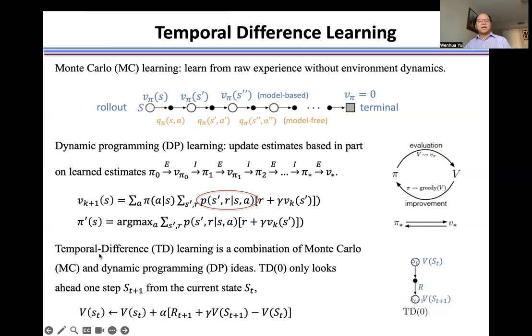Now, the temporal difference learning is a combination of Monte Carlo and the dynamic programming. The difference is TD, temporal difference, only looks ahead one step.